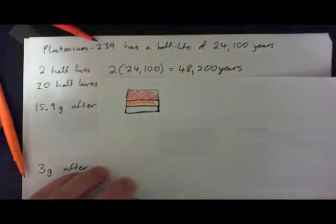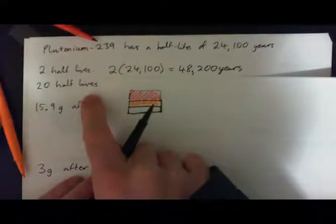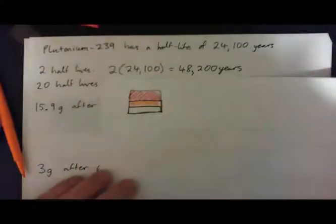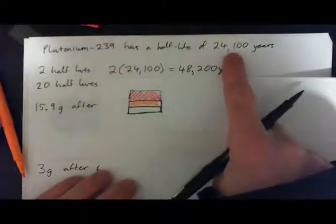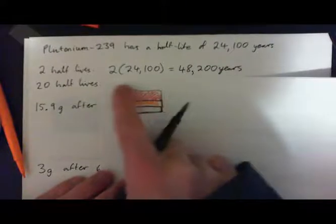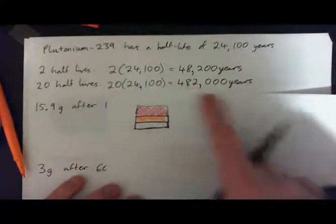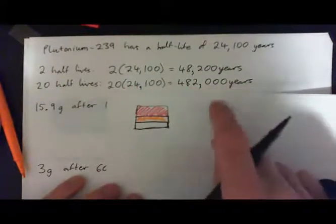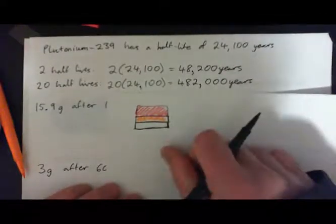So two half-lives is just two times 24,100, that's 48,200 years. Does that make sense? So what's 20 half-lives then? Ten half-lives would be 10 times that — 241,000 years. So 20 half-lives is just 20 times that: 482,000 years. Does that make sense? So this is two half-lives, that's 20 half-lives.